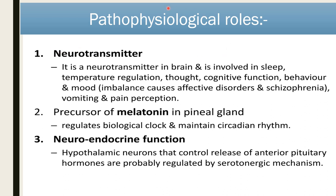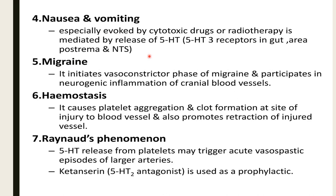Pathophysiological role of serotonin as a neurotransmitter in the brain: it involves sleep, temperature regulation, thought, cognitive function, behavioral and mood regulation. Imbalance can cause affective disorder, schizophrenia, vomiting, and pain perception. It is a precursor of melatonin in the pineal gland, regulating the biological clock and maintaining circadian rhythm. Neuroendocrine function: hypothalamic neurons controlling release of anterior pituitary hormones are probably regulated by serotonergic mechanisms. In nausea and vomiting, especially caused by cytotoxic drugs or radiotherapy, mediated release of 5-HT in the intestine increases stimulation of 5-HT receptors in the gut, area postrema, and nucleus tractus solitarius, causing nausea and vomiting.